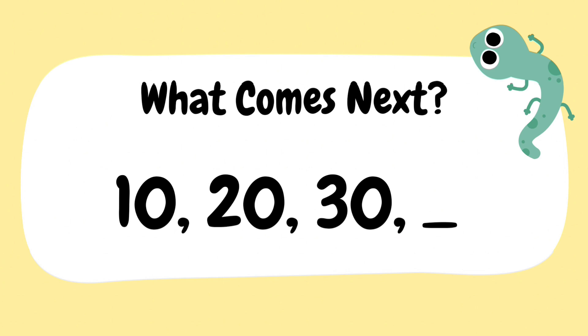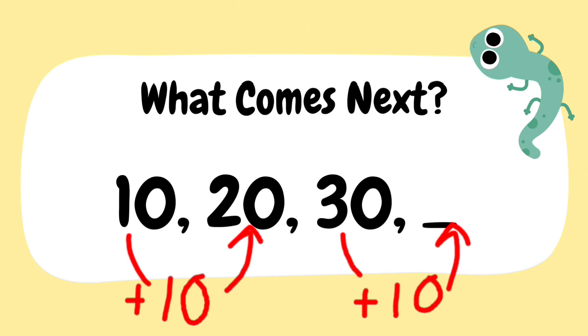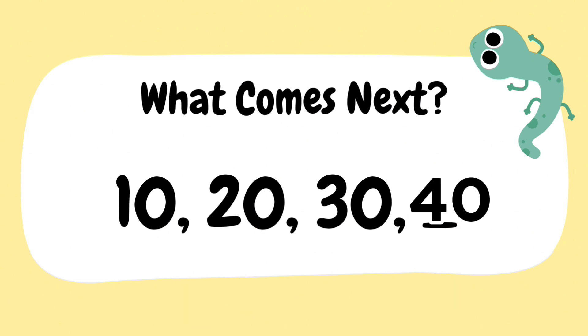10, 20, 30. We can see that there is a difference of 10 between every number, so by adding 10 to 30, our next following number is 40.